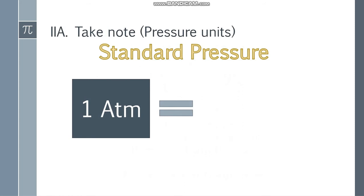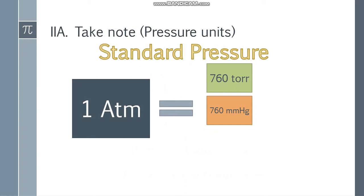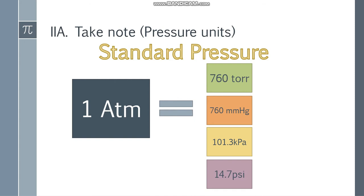Also take note we have many pressure units and all of these are standard pressure. Standard pressure is 1 atm. It can also be 760 Torr, 760 mmHg or millimeters of mercury, 101.3 kilopascal or kPa, and lastly 14.7 psi or pounds per square inch. They are all equivalent to each other. This will be useful if they have different units because when solving a problem the units should be the same — if the first one is atm the next one should also be atm.